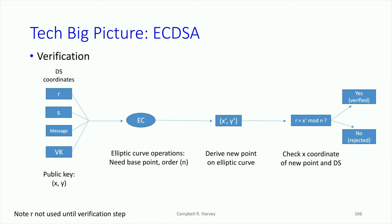To verify the signature, we take the two coordinates R and S, the message, and the verification key — which is the public key. We pass all of that through the elliptic curve operation with the base point and the order, and we derive a new point. We then check the X coordinate of that point. If it's verified, then it is a valid signature, which means the person signing must have the private key. That's how a digital signature actually works.